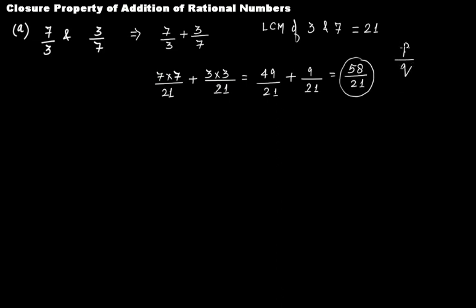So this 58/21 is clearly of the form p/q, the required condition of any number to be a rational number. It should be of the form p/q where q and p both can be negative, and this q should not be equal to zero.